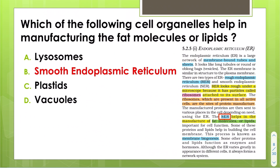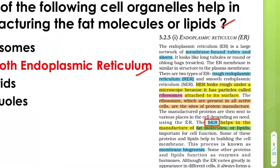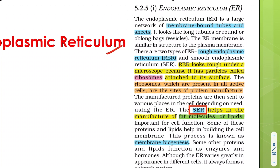The cell organelle that helps in the manufacture of fat molecules or lipids is the smooth endoplasmic reticulum. Endoplasmic reticulum is of two types: rough and smooth. Rough endoplasmic reticulum has ribosomes attached to it. Smooth endoplasmic reticulum helps in the manufacture of fat molecules or lipids.